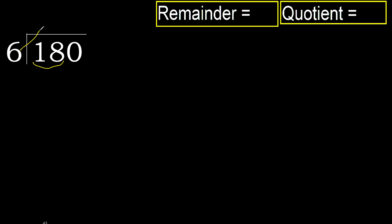6 multiplied by 4 is 24, which is greater. So multiply by 3 instead: 18. 18 is not greater.